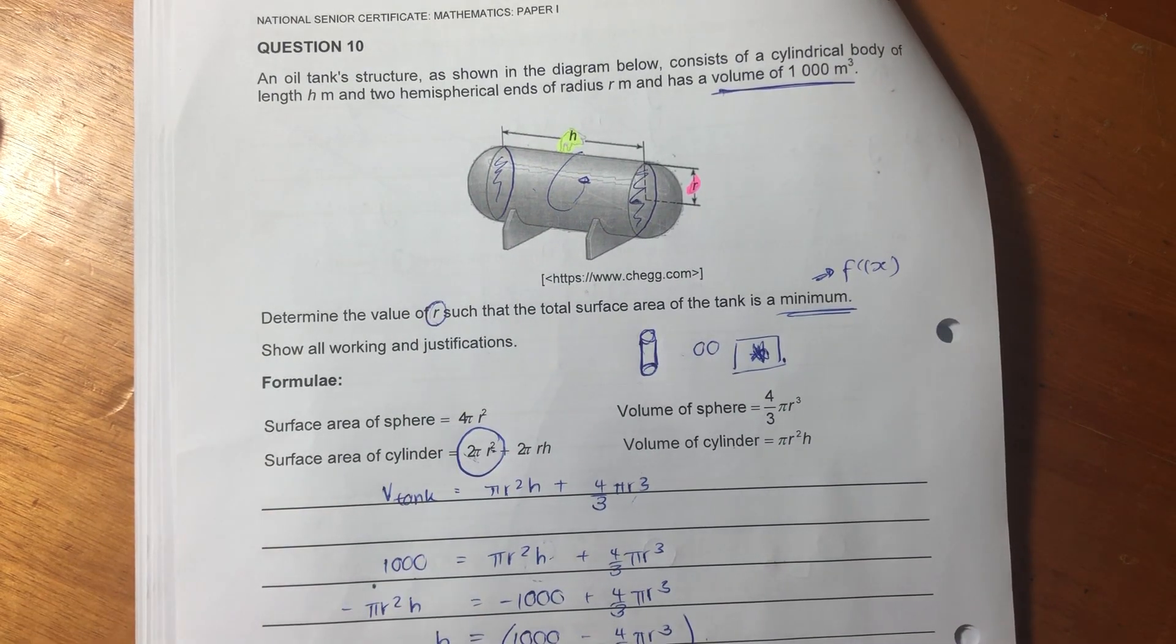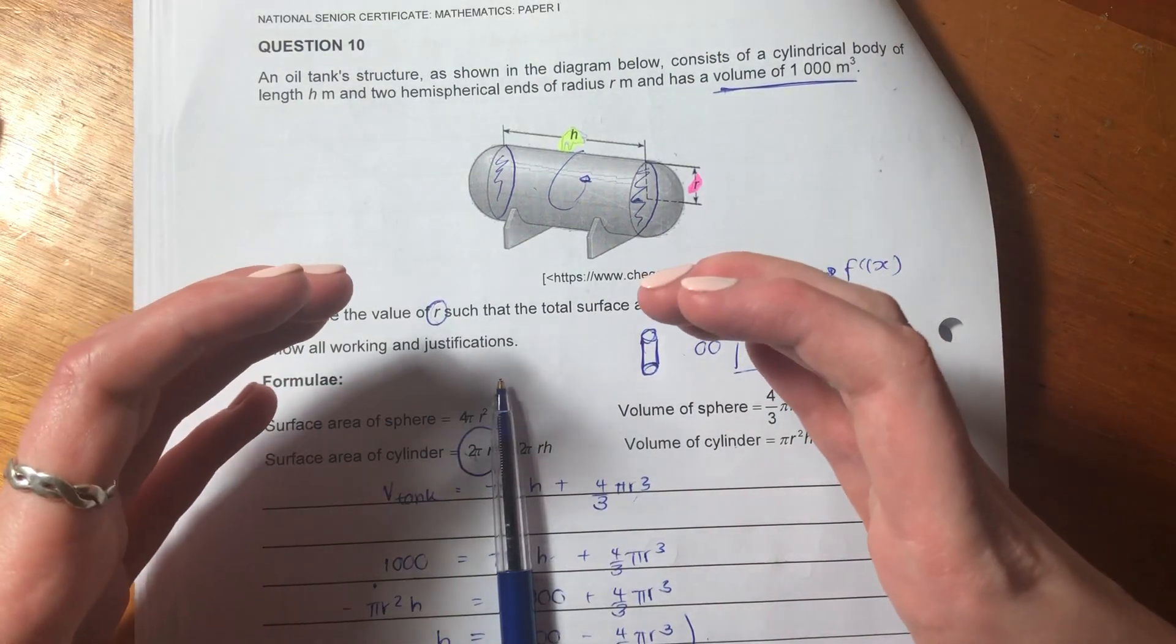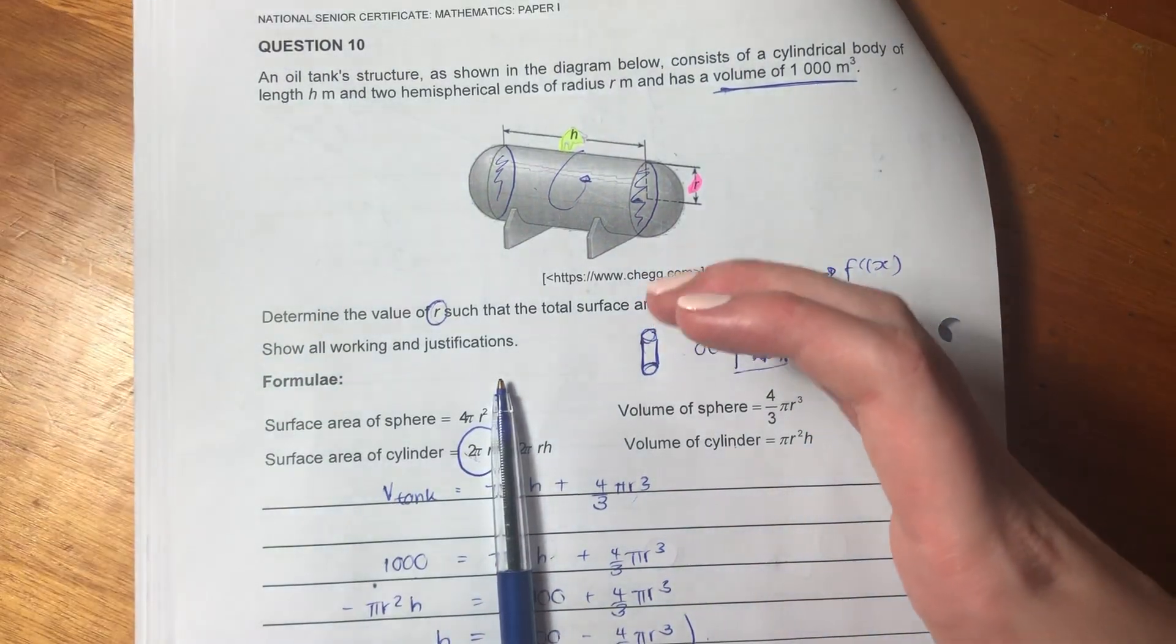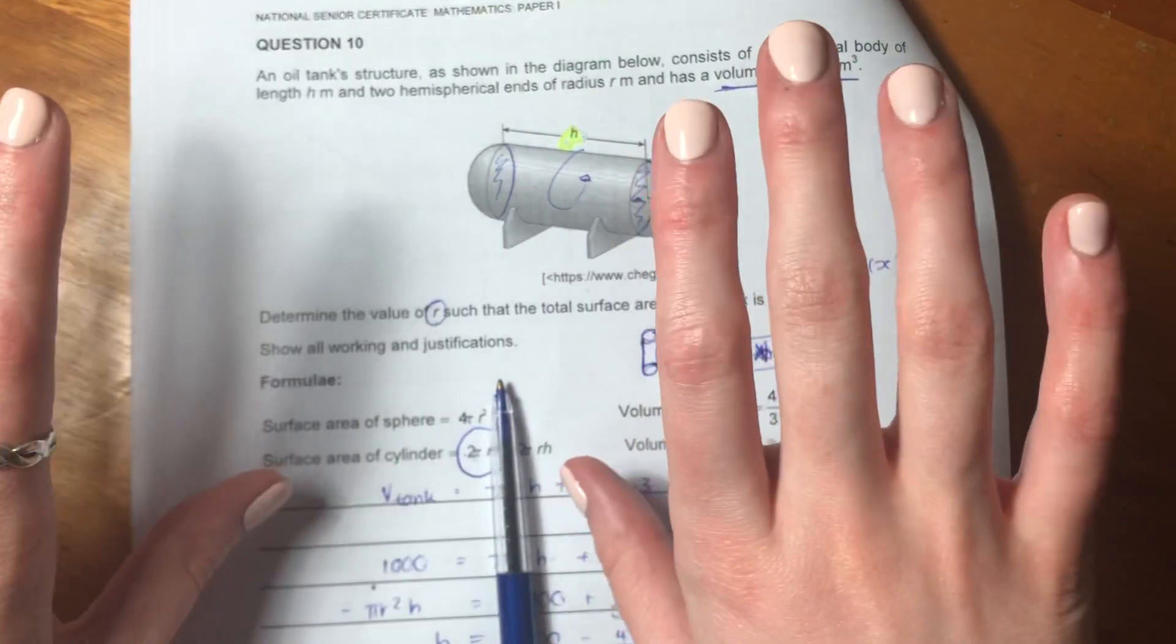Well, let's just go back to what we're including. We have these two hemispheres, and then we have this cylinder in the middle.